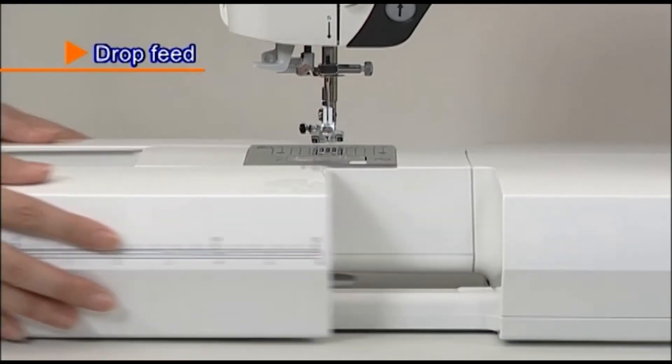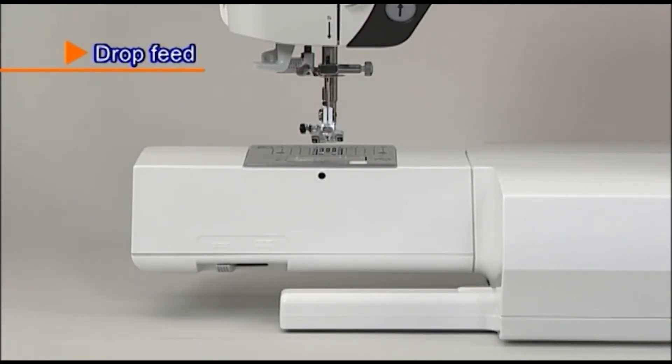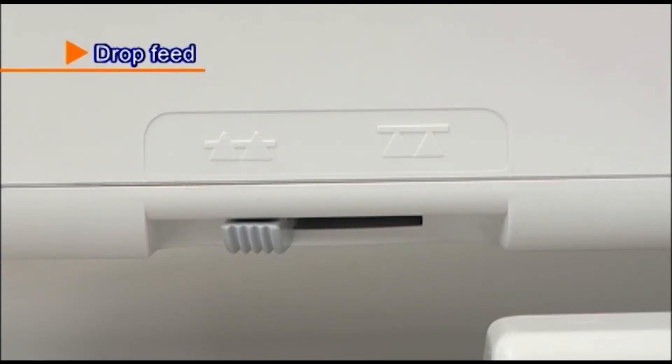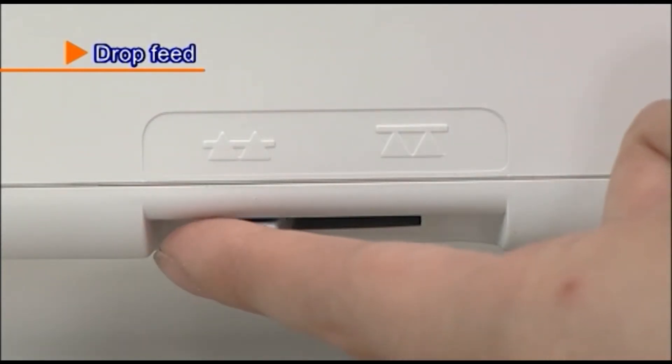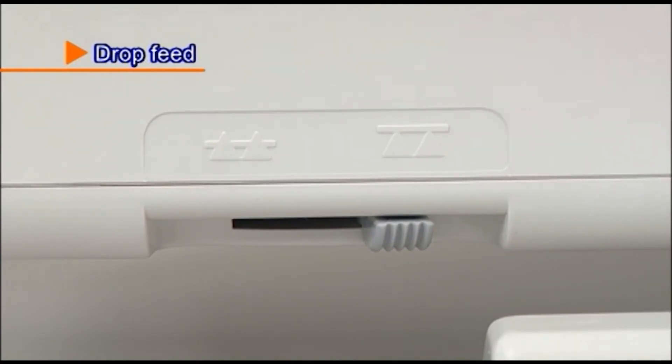For free motion sewing or attaching buttons, remove the auxiliary bed and move the drop feed knob to the right side to lower the feed dog.